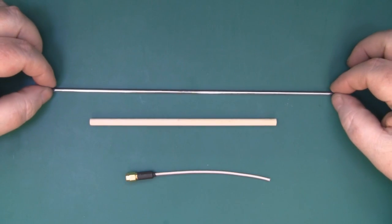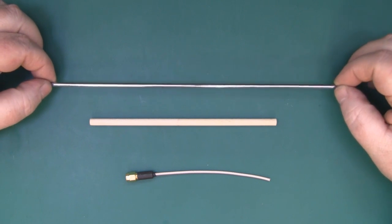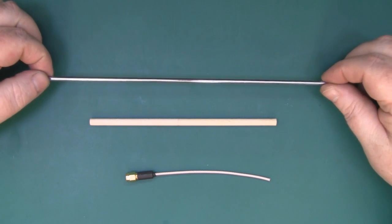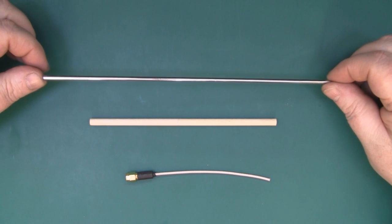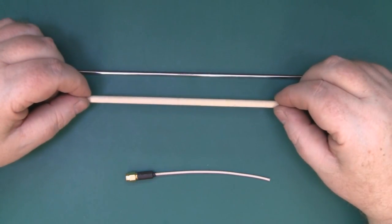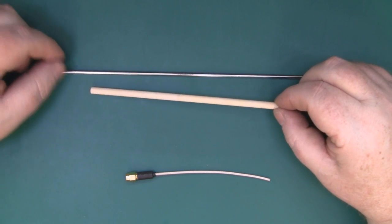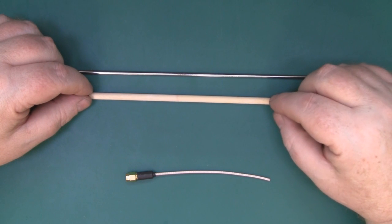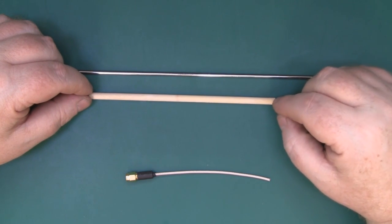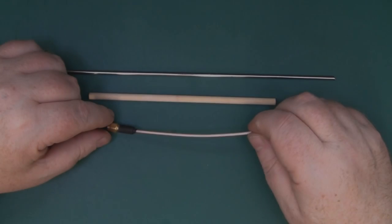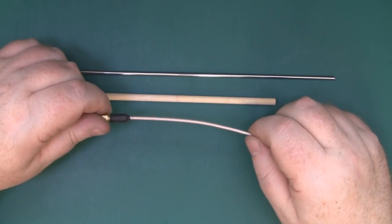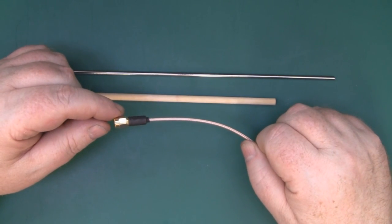As for materials to build this little Yagi, I'm going to be using some coat hanger wire that's 3 mm in diameter thick. I'm also going to be using a piece of wooden dowel as the main boom, 6 mm in diameter, and I'm going to be connecting it all up with this short pigtail of coax here with an SMA connector on the end.